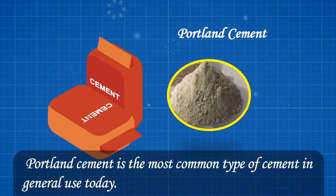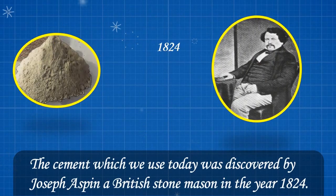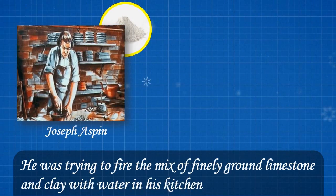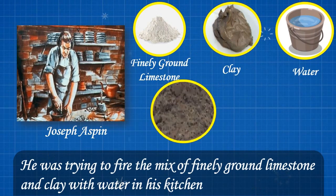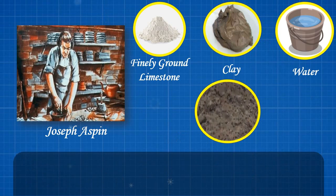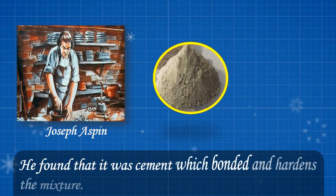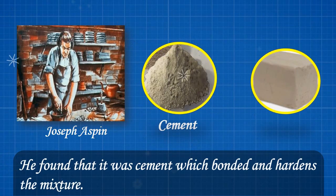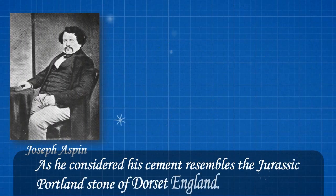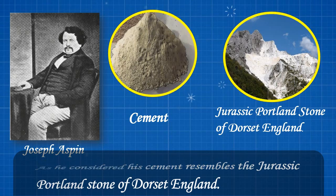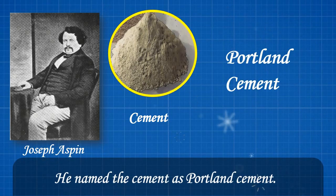Portland cement is the most common type of cement in general use today. The cement we use today was discovered by Joseph Aspdin, a British stonemason, in the year 1824. He was trying to fire a mix of finely ground limestone and clay with water in his kitchen. After a while, he noticed that the mixture was set and hard, and found that it was cement which bonded and hardened the mixture. As he considered his cement resembled the Jurassic Portland stone of Dorset, England, he named the cement Portland cement.